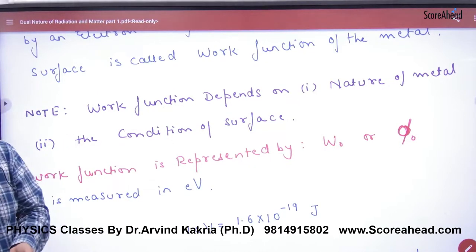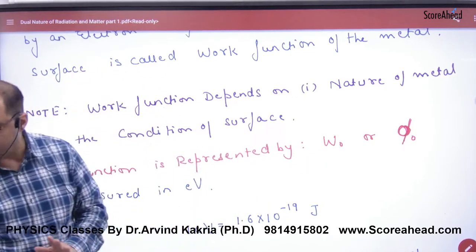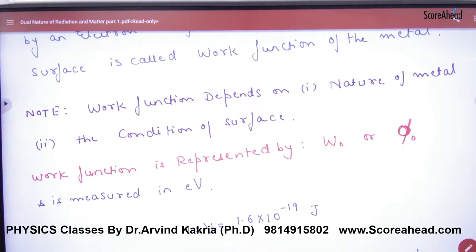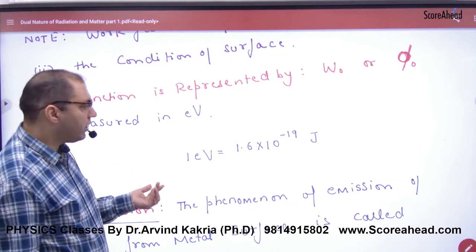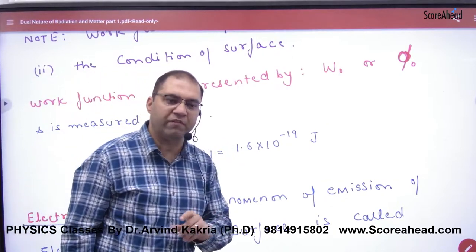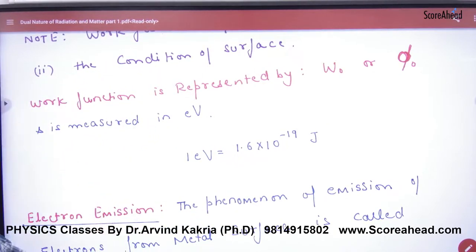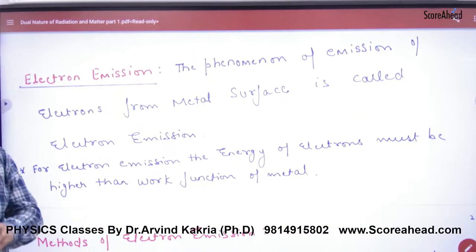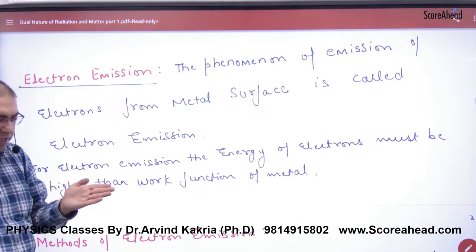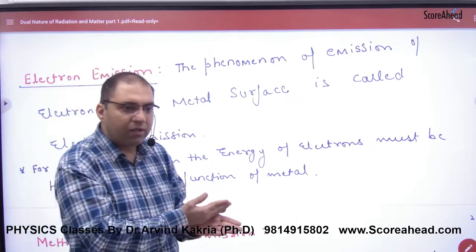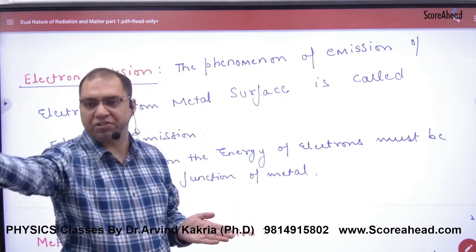Work function is represented as W₀ or φ — it can be represented in either way. Work function is measured in electron volts, and 1 electron volt equals 1.6 × 10⁻¹⁹ joules. This chapter deals with electrons coming out of a metal surface when photons, light, or any radiation is incident on it.